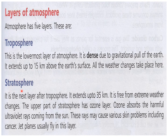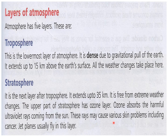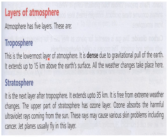After the troposphere comes the stratosphere, which extends up to 35 kilometers. It is free from extreme weather changes. The upper part of the stratosphere has the ozone layer, which absorbs the harmful ultraviolet rays coming from the sun that may cause various skin problems including cancer. Jet planes usually fly in this layer. Remember: ozone layer is in the stratosphere, and jet planes fly here.